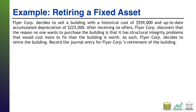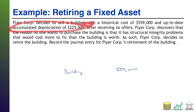We are getting rid of a building on our books. A building has a debit balance — in this case of five hundred fifty-nine thousand — so to get rid of that we credit Building five hundred fifty-nine thousand. We also have to get rid of its related accumulated depreciation, which is up-to-date at two hundred twenty-five thousand. Since accumulated depreciation has a credit balance as a contra asset, we debit it — so debit Accumulated Depreciation: Building, two hundred twenty-five thousand.